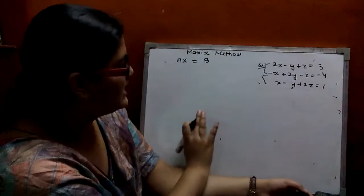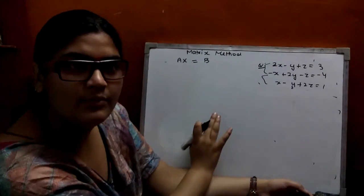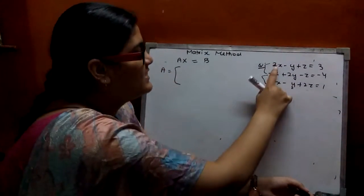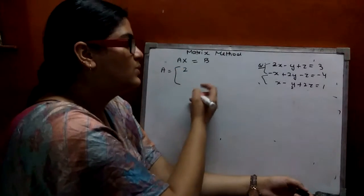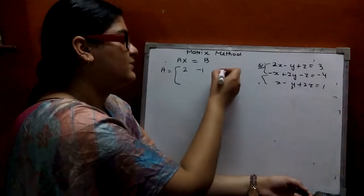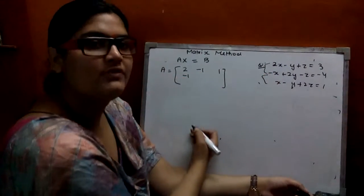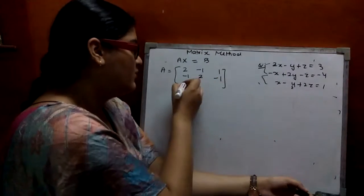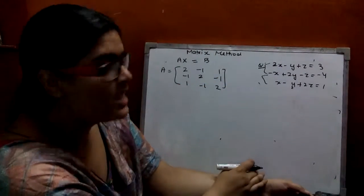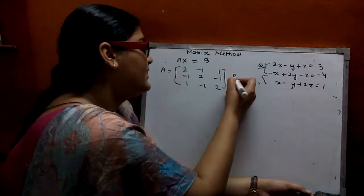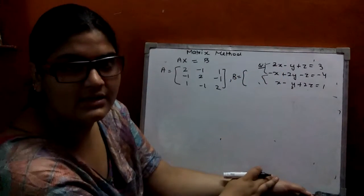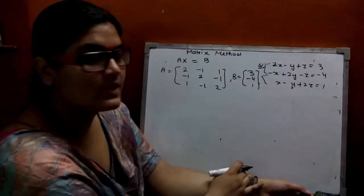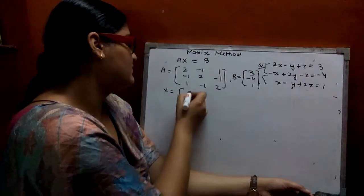A is the matrix of coefficients of X, Y, Z. In the first equation, coefficient of X is 2, Y is minus 1, Z is 1. In the second equation, coefficient of X is minus 1, Y is 2, and Z is minus 1. For the third, it is 1 and minus 1. B matrix is the values on the right-hand side: 3, minus 4, and 1. And X is the matrix containing X, Y, Z.